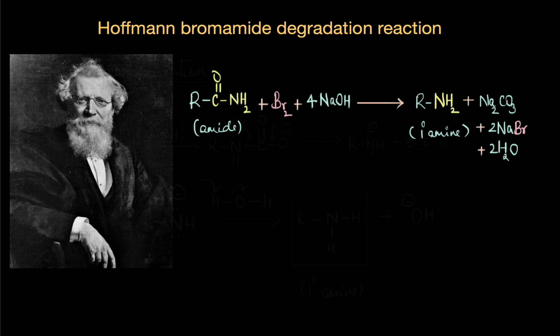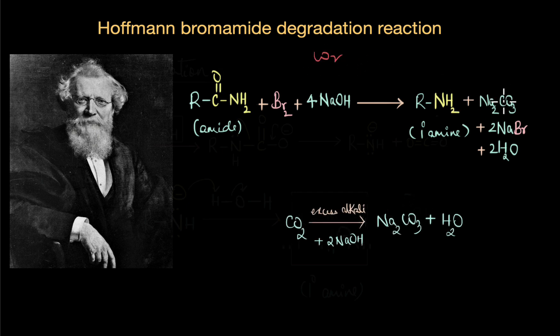Before wrapping up this video, let's see what are the byproducts that are formed here. We saw amide getting converted to primary amine, but in the mechanism we saw carbon dioxide getting eliminated. Why are we not showing carbon dioxide here? Why are we writing sodium carbonate instead? That's because the reaction medium is still highly alkaline, and in such a highly alkaline medium carbon dioxide gets converted to Na2CO3 sodium carbonate.